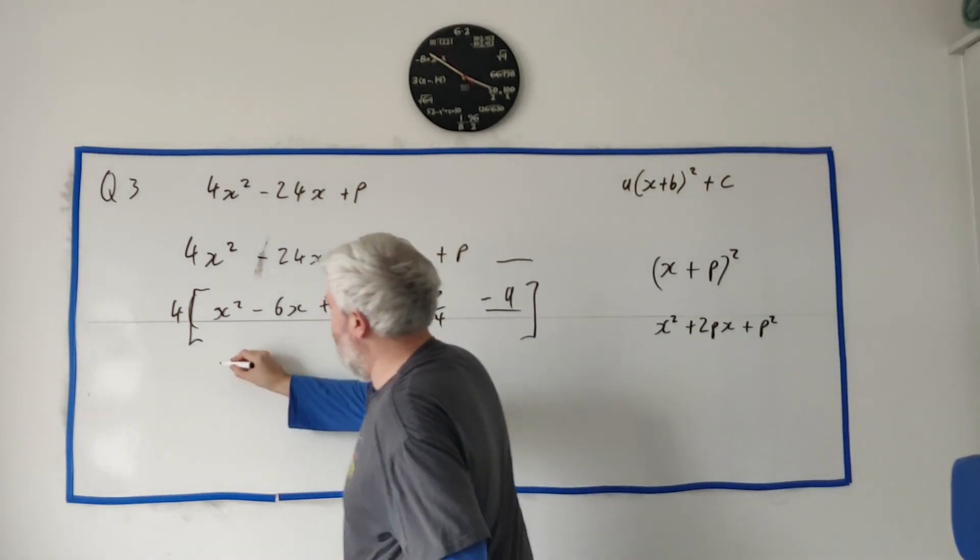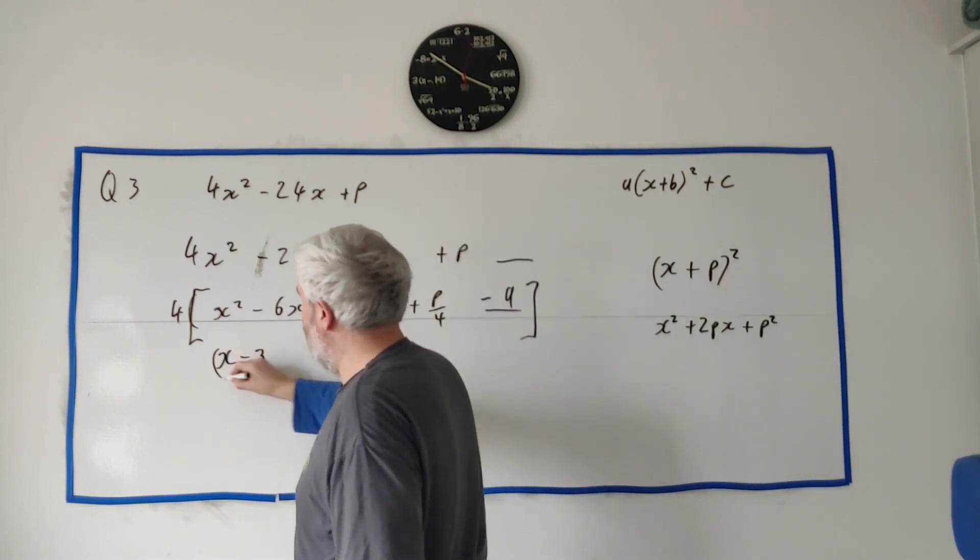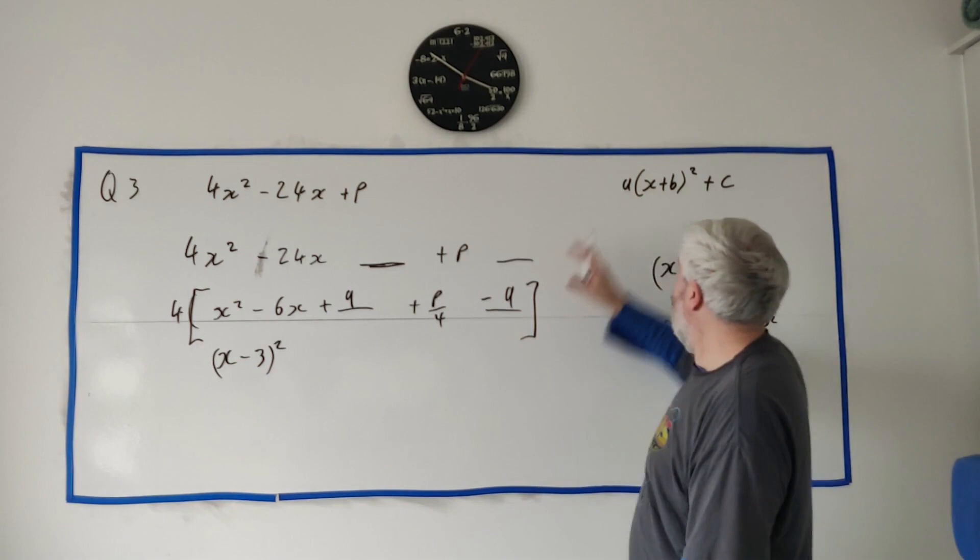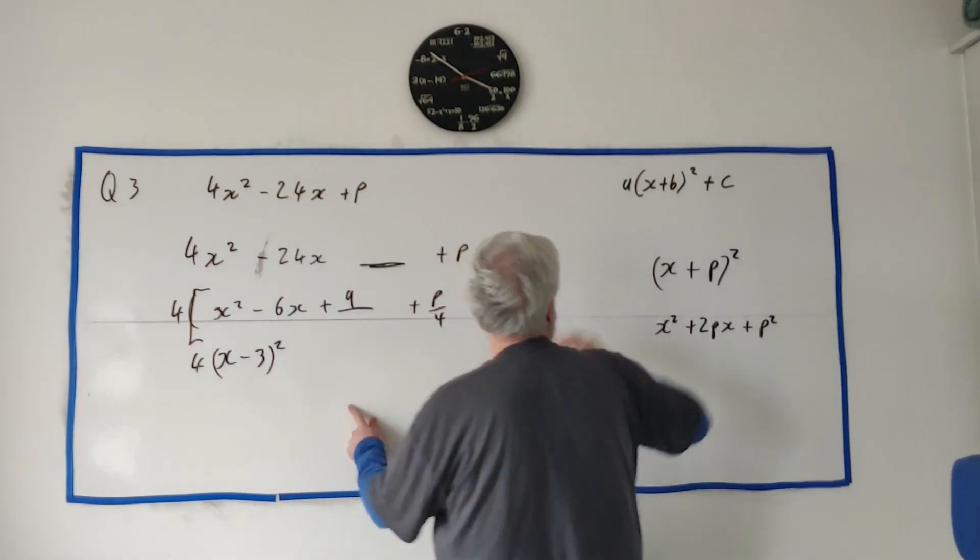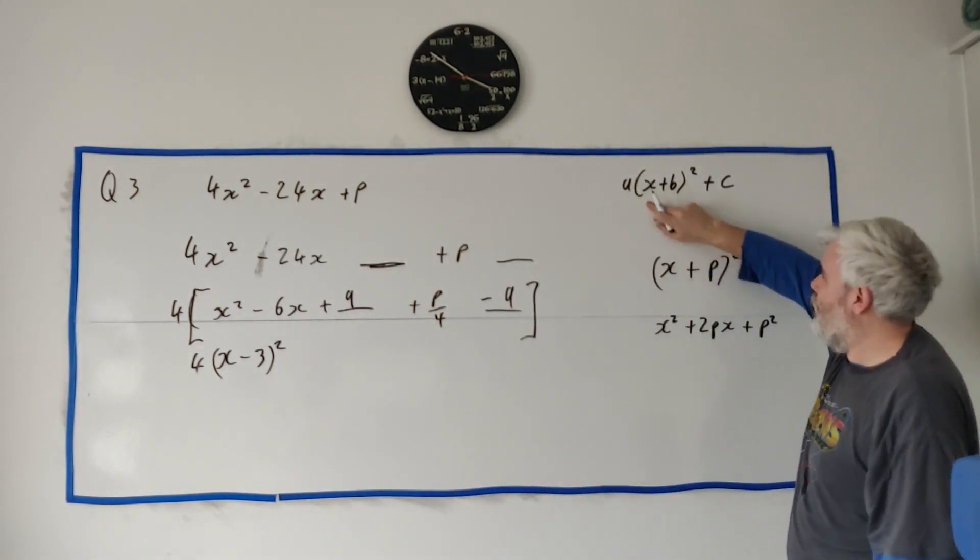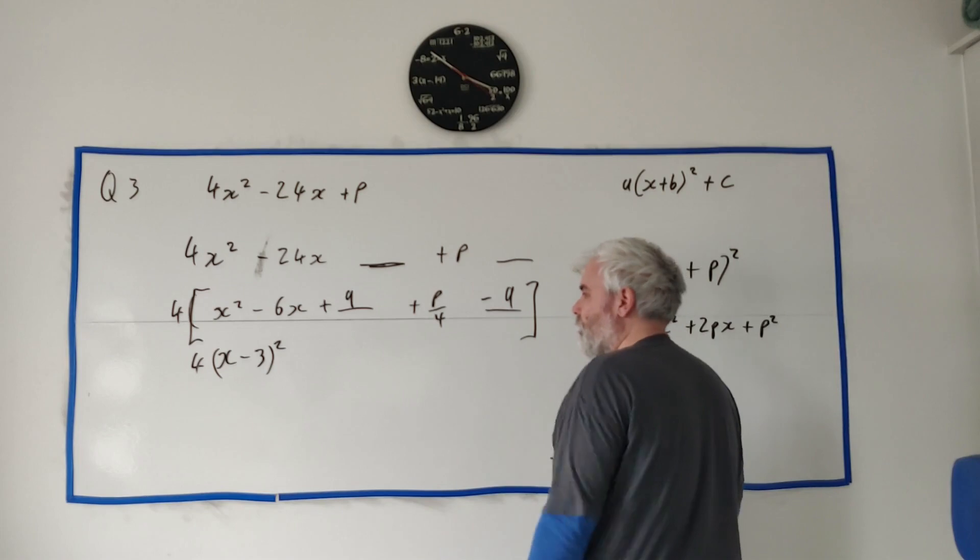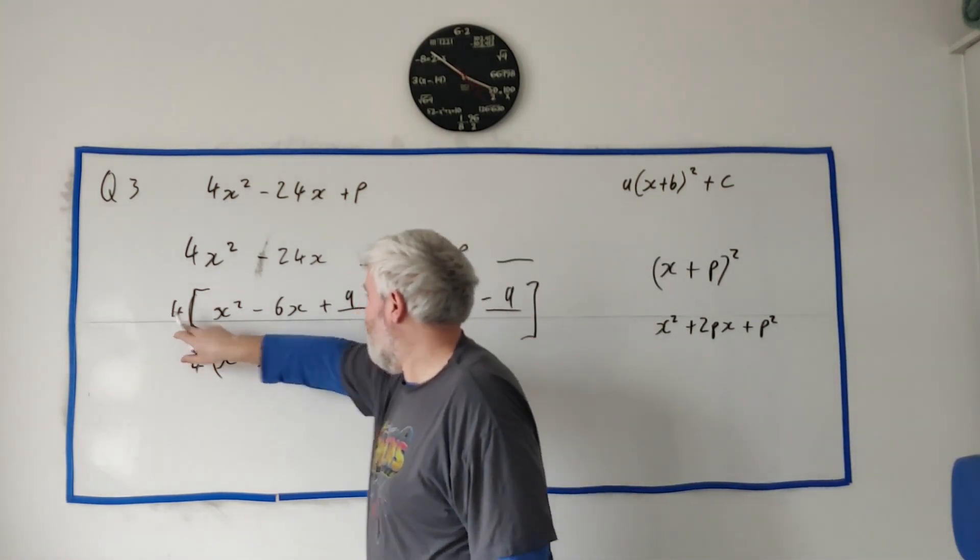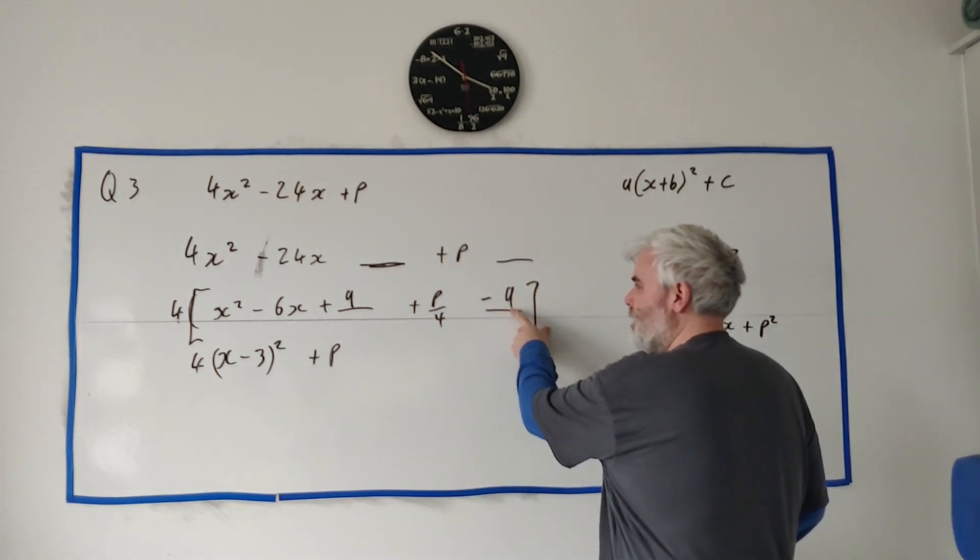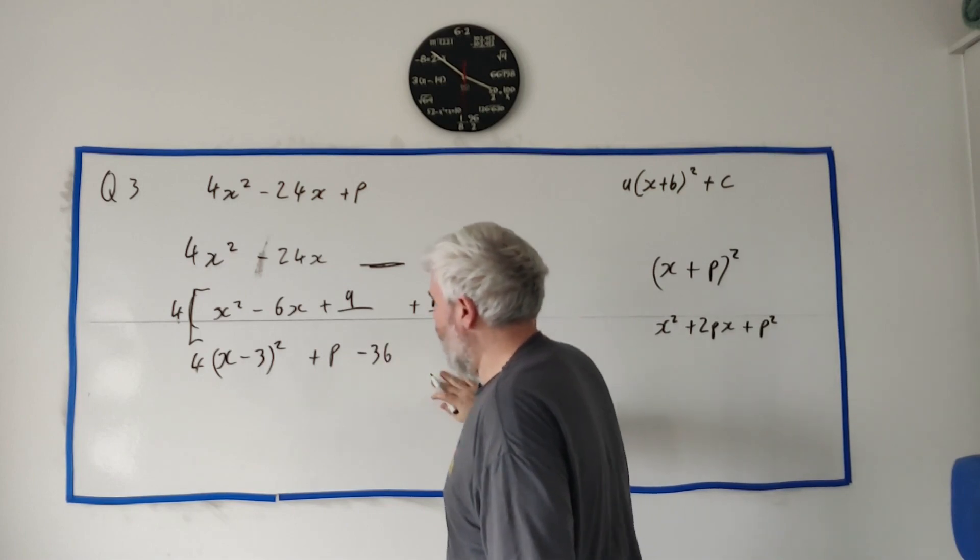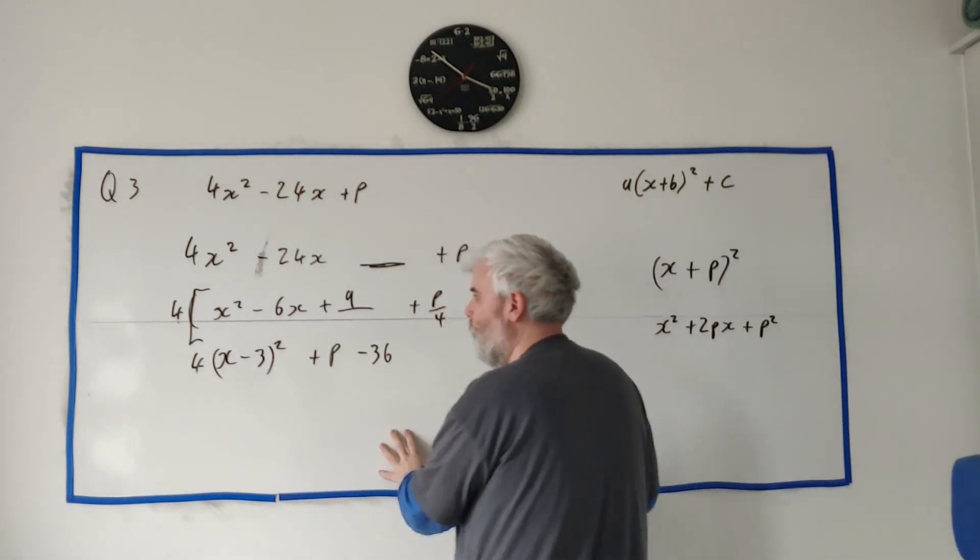This guy right here now, instead of x squared minus 6x plus 9, I can write x minus 3 squared. And that's starting to look like what they wanted. Let's see. There's still a 4 outside this. Yeah, they wanted something outside, so that's good. But they don't want it to multiply the c. I shouldn't have put the bracket all the way over here. But anyway, let's multiply the 4 back in.